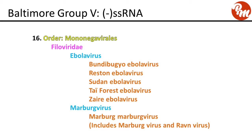Order mononegavirales, family Filoviridae, genus ebolavirus. Species include Bundibugyo ebolavirus, Reston ebolavirus, Sudan ebolavirus, Taï Forest ebolavirus, and Zaire ebolavirus. Genus marburgvirus includes Marburg marburgvirus, which itself includes two viruses: the Marburg virus and the Ravn virus.